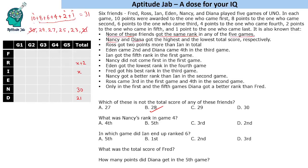Since 21 and 30 have been assigned to Dinah and Nancy, the remaining totals for the other four players are 29, 27, 25, and 23. For Ross to have exactly two more than Ian, the possible pairs are: Ross=29 and Ian=27, or Ross=25 and Ian=23. So three pairs are possible at this point.